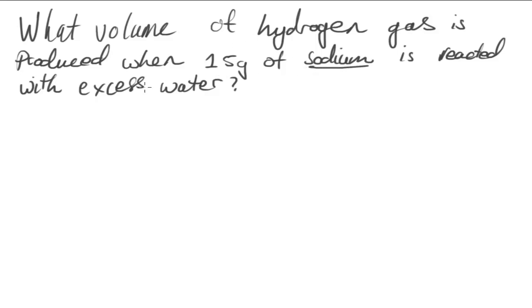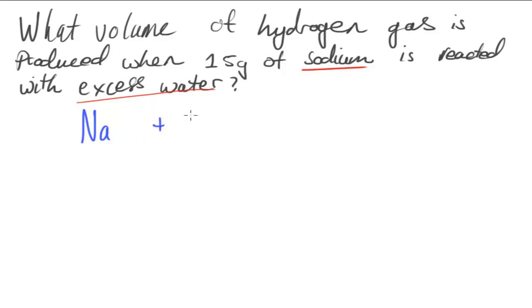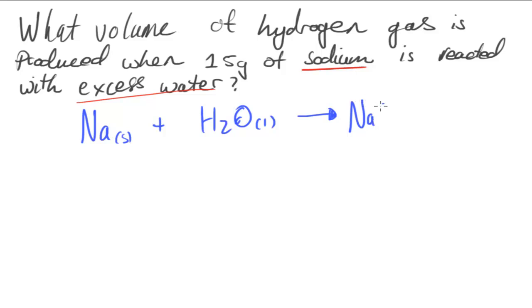We know that sodium is reacting with excess water, so the reaction is going to be Na + H₂O. Sodium is a solid and water is a liquid. When group one metals react with water, they produce a metal hydroxide — in this case NaOH — and also produce hydrogen gas, H₂. Now that I've written out the equation, I need to balance it.